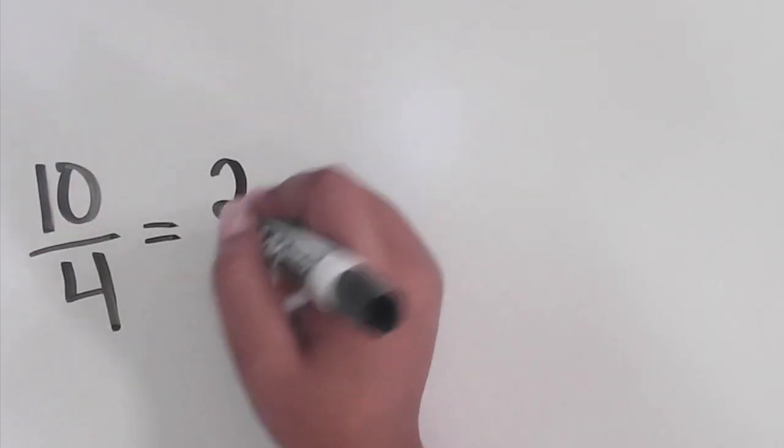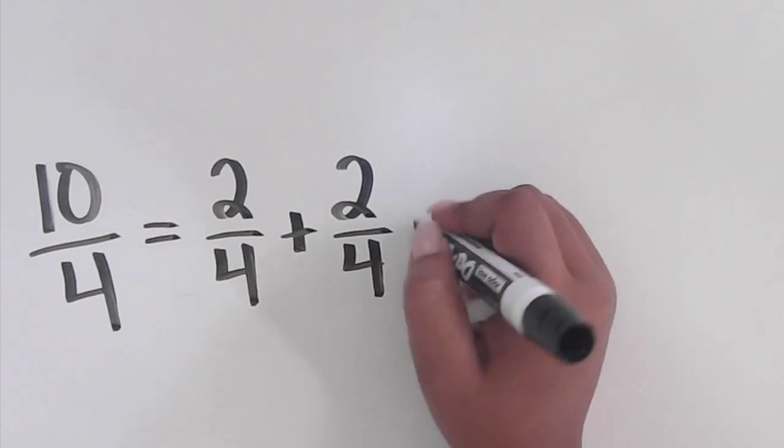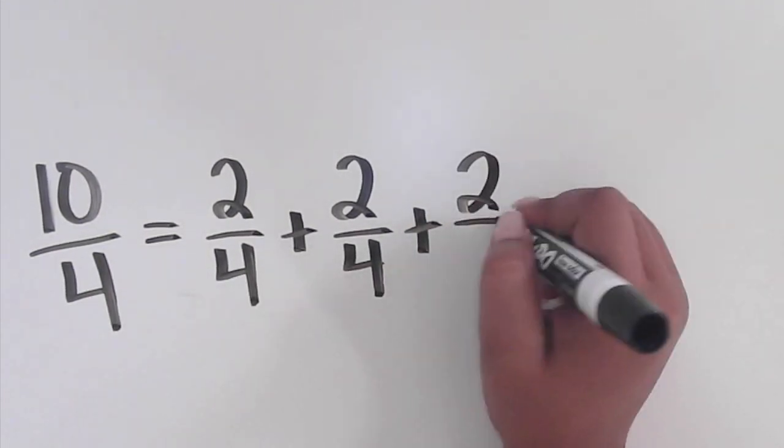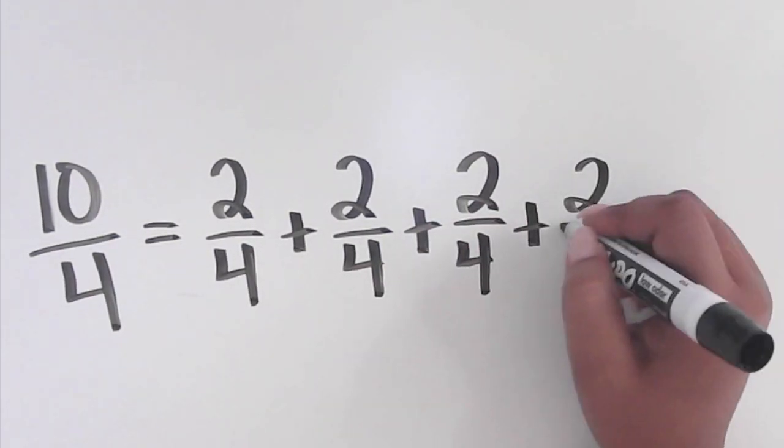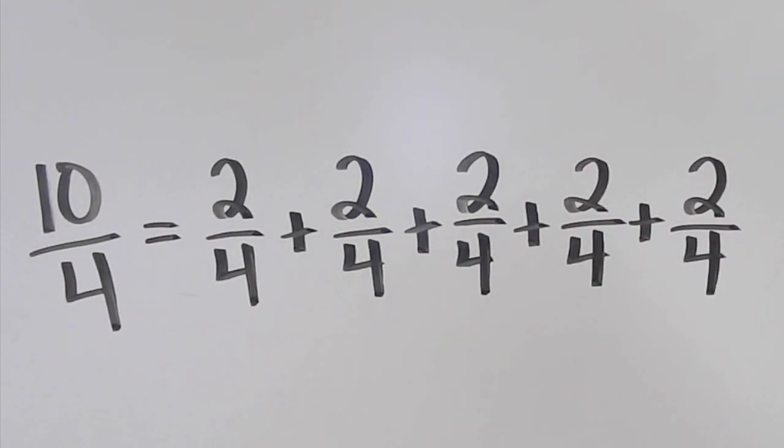Let's look at this next example where the fraction 10 fourths is decomposed into a sum of non-unit fractions. Fractions don't have to be decomposed using only unit fractions or only non-unit fractions. There can be a combination of both.